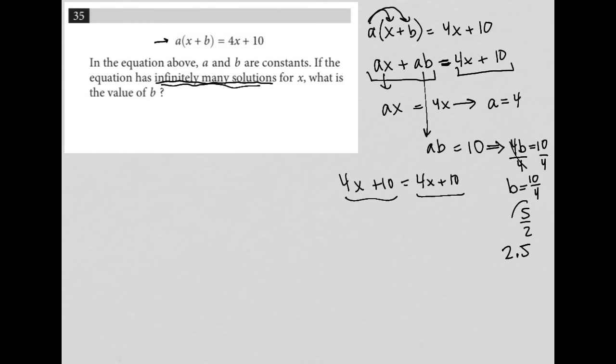So either 5 over 2 or 2.5 will be perfectly good answers for this question because the question is asking us what is the value of B. All right, so hopefully this explanation helped clarify what this infinitely many solutions thing means. It does show up every so often on the test, so it's worth knowing that infinitely many solutions just means that both equations are literally the exact same equation.